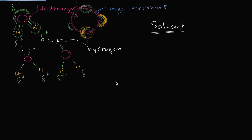The key feature that makes water a good solvent, or at least a good solvent for a large class of molecules, is its polarity. If we take sodium chloride, often known as table salt — NaCl — the sodium and chloride are attracted by ionic bonds.